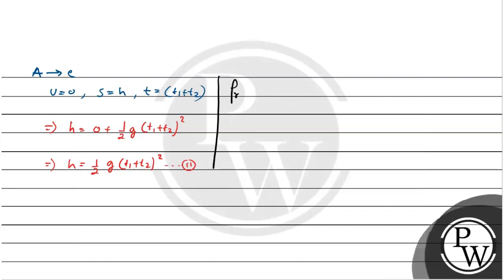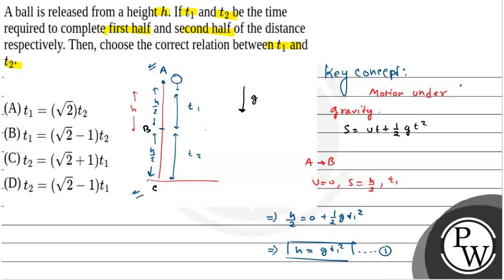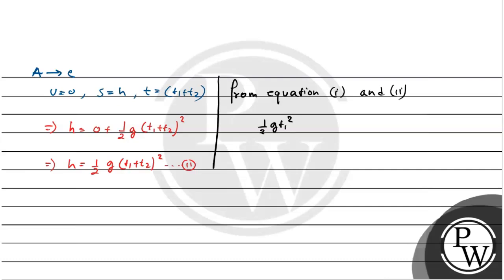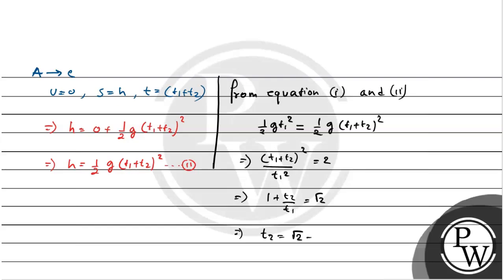From equations 1 and 2: equation 1 gives h equals g t1 squared, and equation 2 gives h equals half of g times t1 plus t2 whole squared. Setting them equal: half of g t1 squared equals half of g times t1 plus t2 whole squared. Simplifying, t1 plus t2 whole squared divided by t1 squared equals 2. So 1 plus t2 by t1 equals root 2, giving us t2 equals root 2 minus 1 times t1.